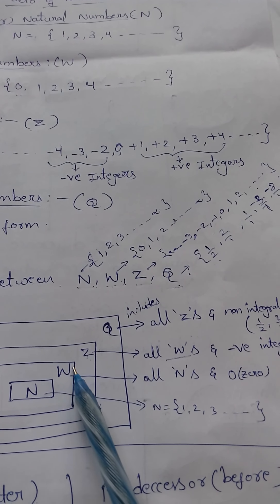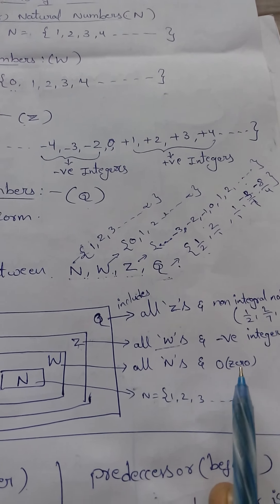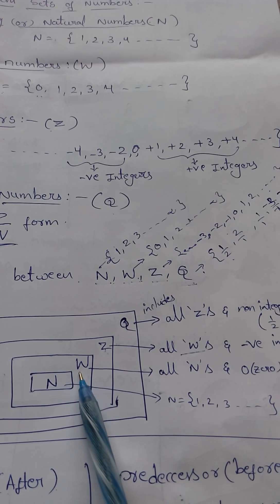And whereas Z, Z means what? Integers. Integers includes all W's, all W's and negative numbers.